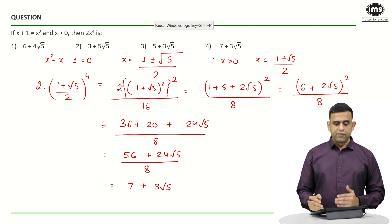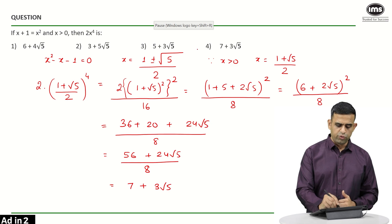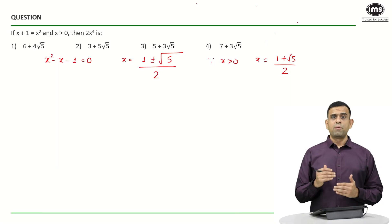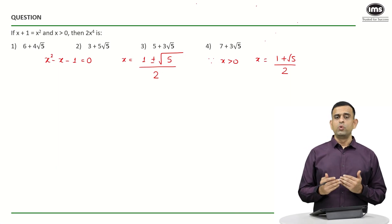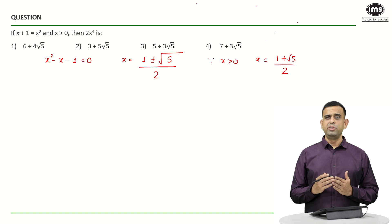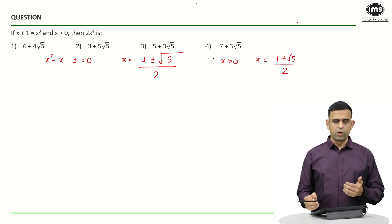Looking at the options, the answer is option number 4. In the earlier method we applied the a plus b whole square formula a couple of times. Let us look at one more approach.